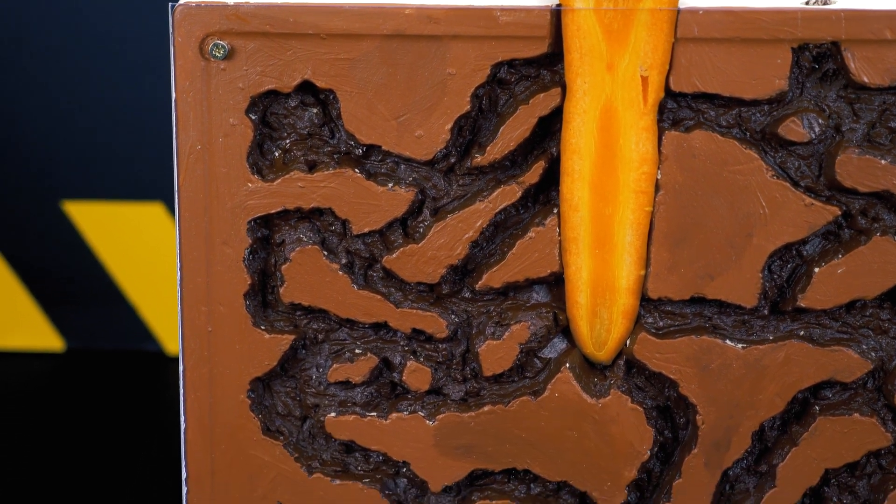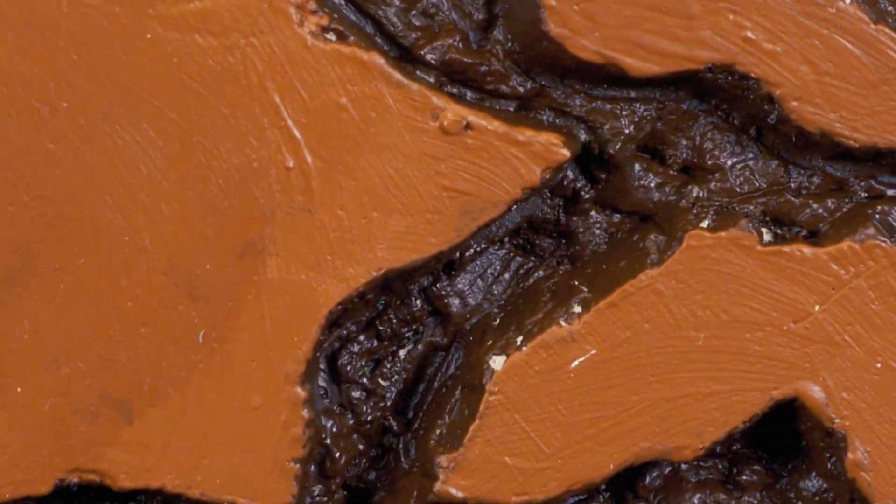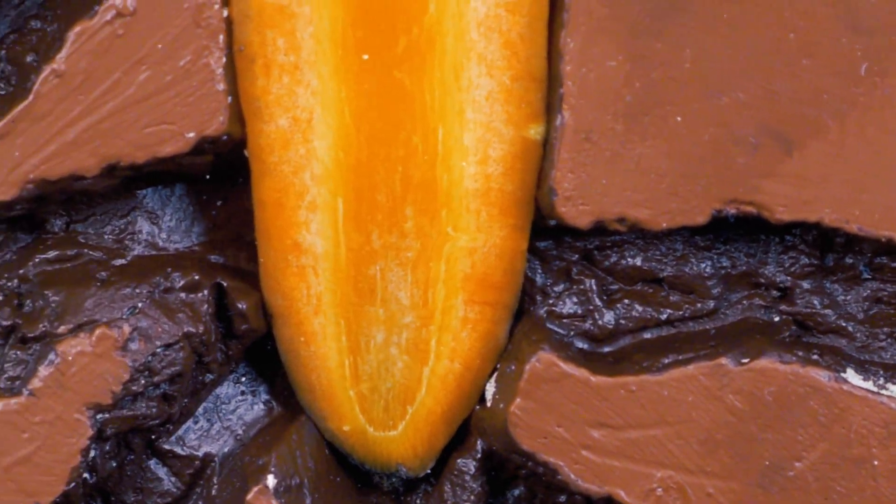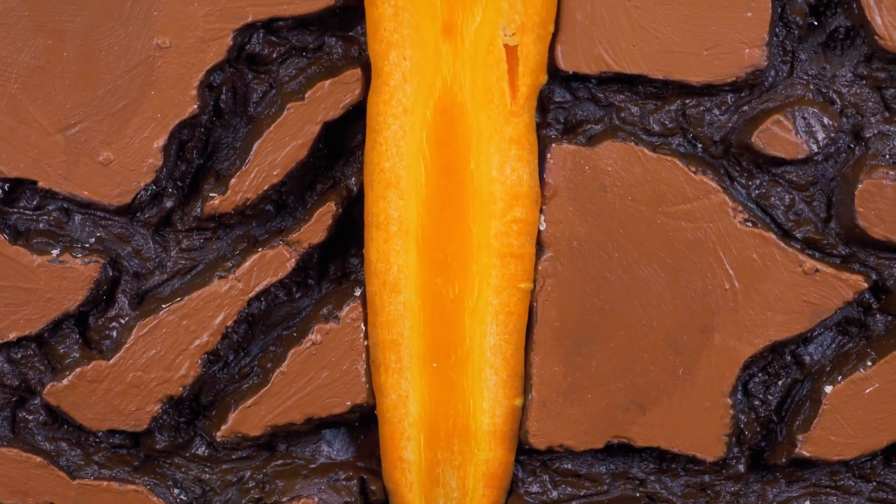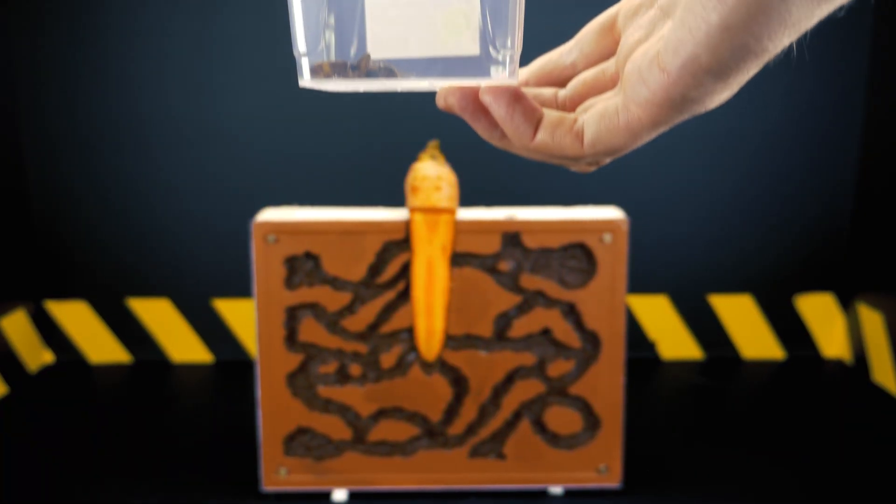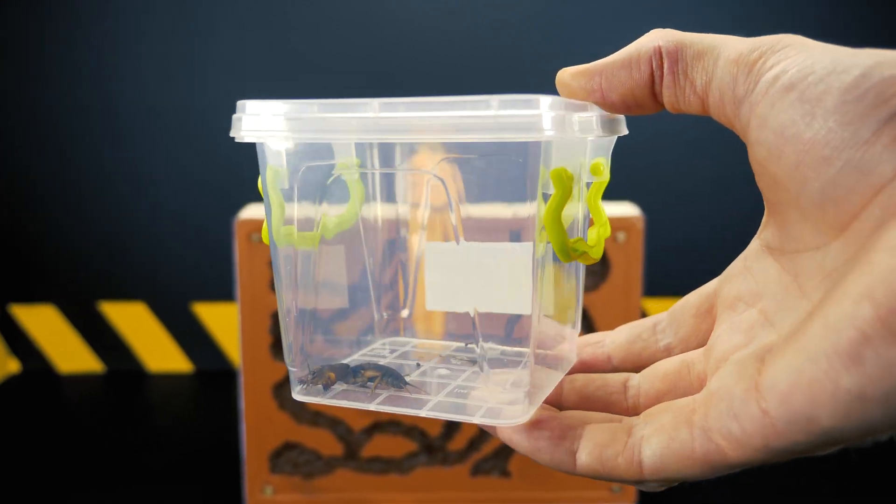And a callus from the scalpel with which I worked while making these tunnels appeared on my finger. On the internet, I learned that it is best to paint gypsum objects with acrylic paint, and I decided to paint our terrarium in two colors.